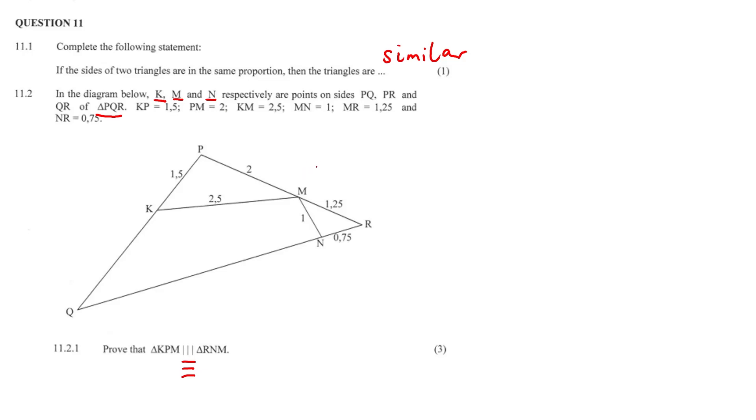So in question 11.2.1, we can see there are similarities here between the triangles. Excuse the pun. Half of 1.5 is 0.75. Half of 2 is 1. Half of 2.5 is 1.25.